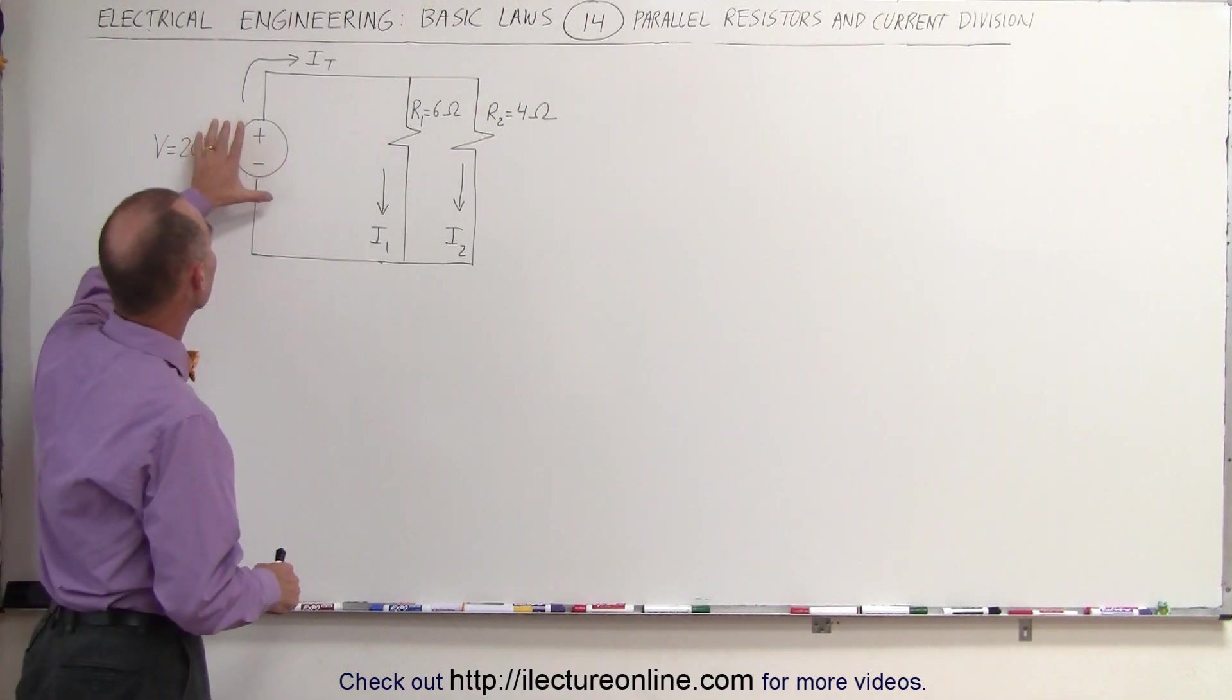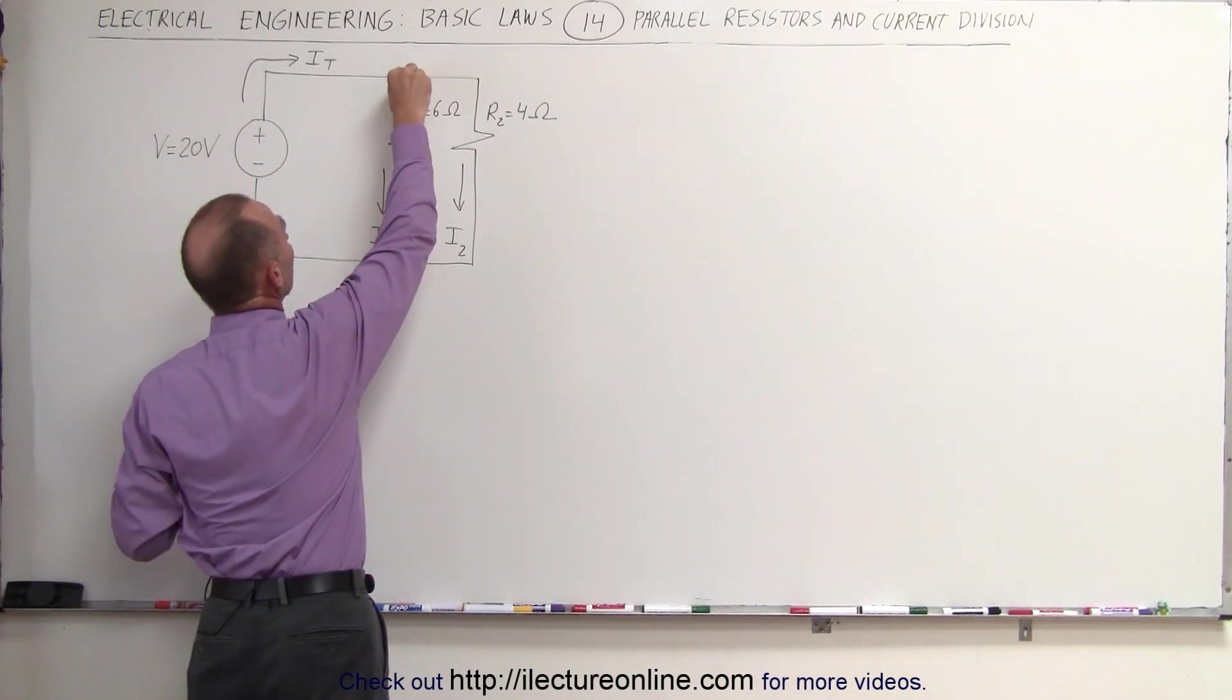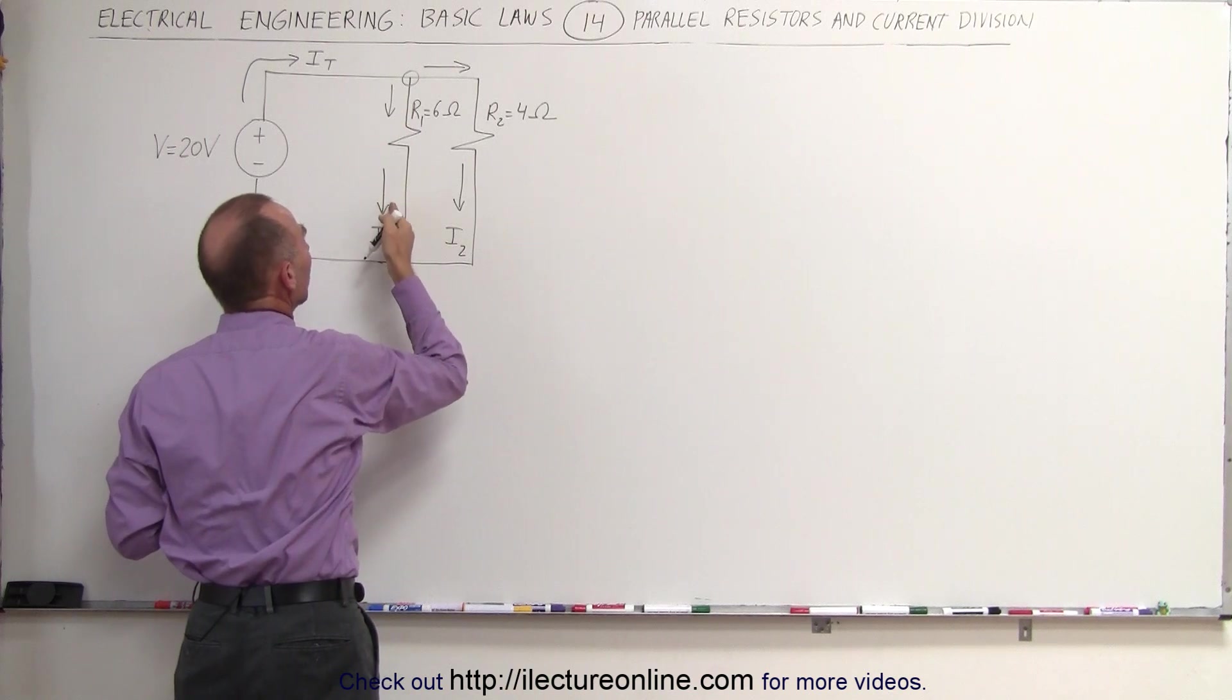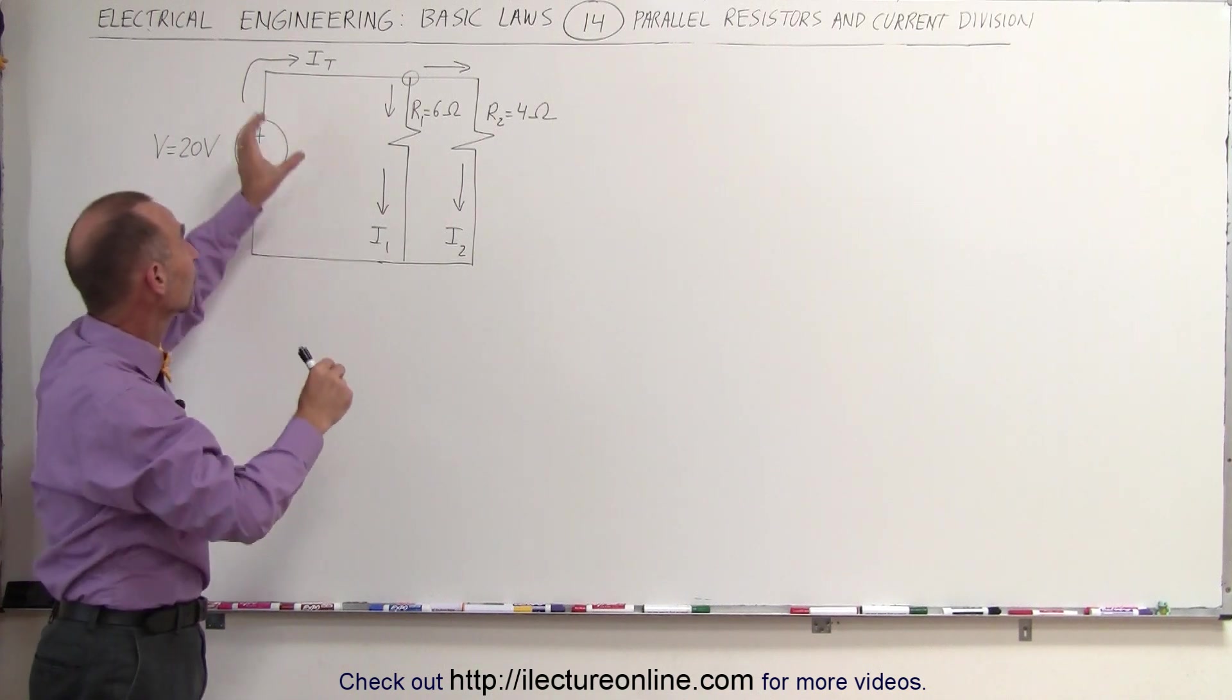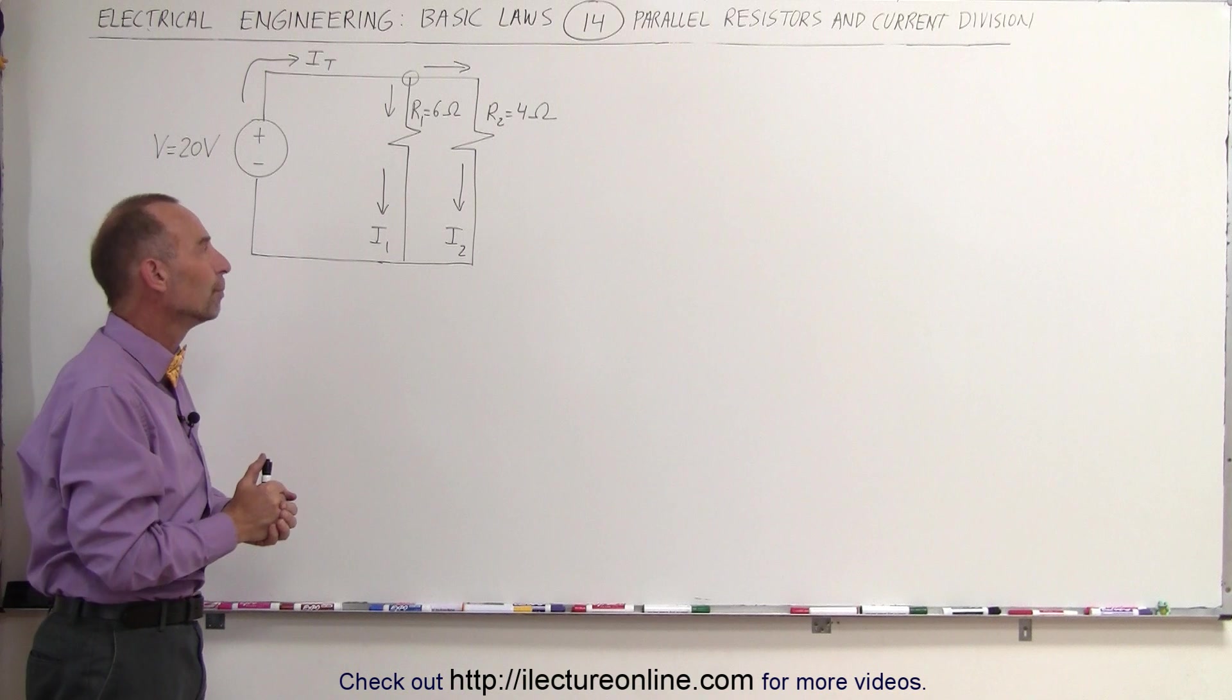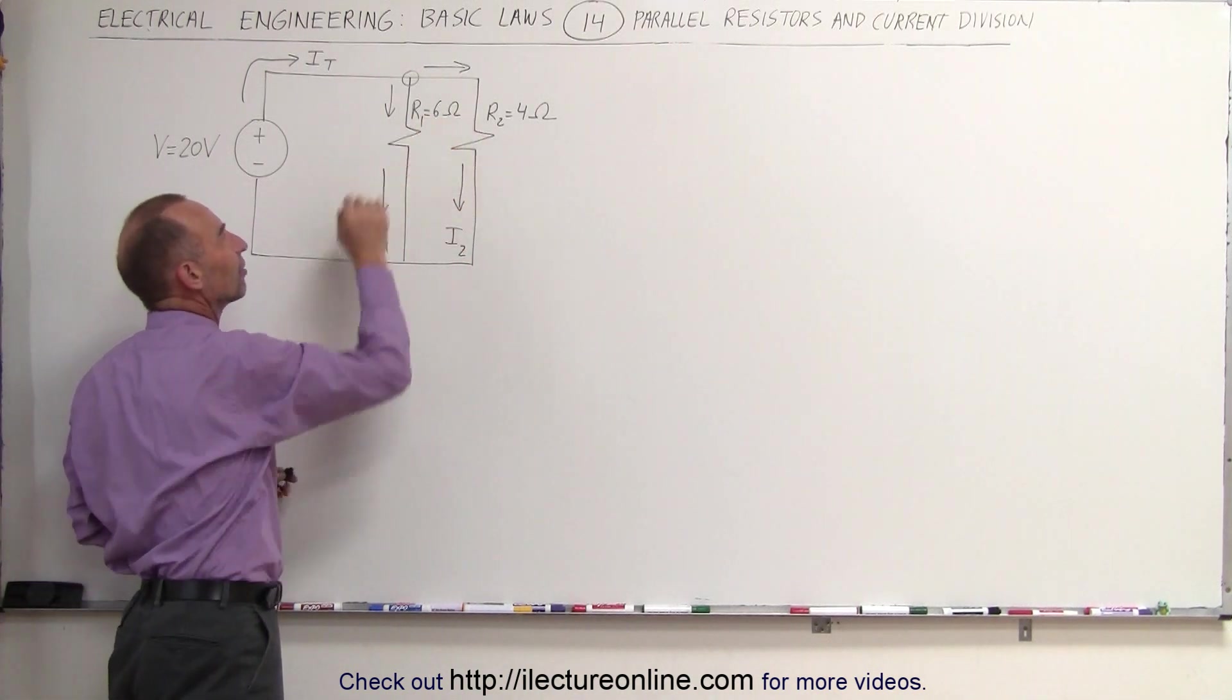Well, we have a current leaving the voltage source, and here we get to this node where it splits up into this direction and this direction. Here we have what we call I1, there we have I2 in the second resistor, and what's happening is the current from the source then gets divided into two separate currents, I1 and I2. We can control the amount of that current by controlling the size of these resistors.